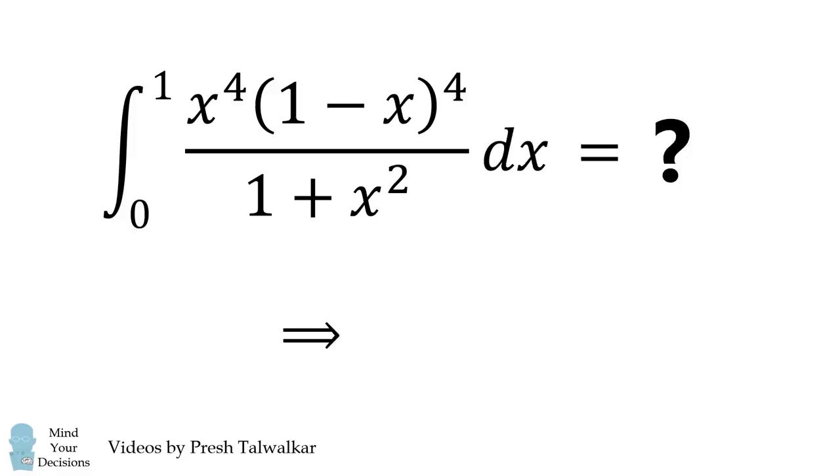Use the result to prove that pi is less than 22 over 7.